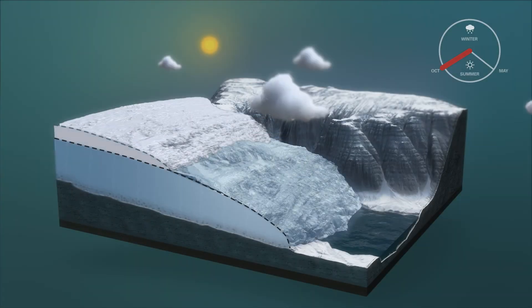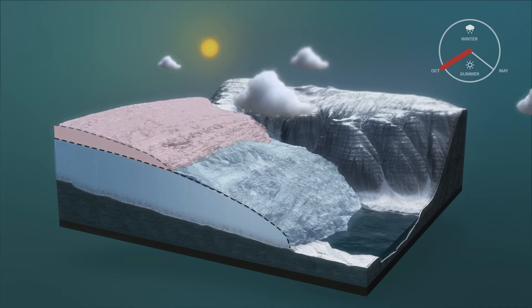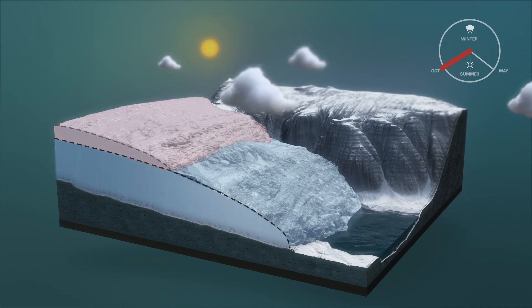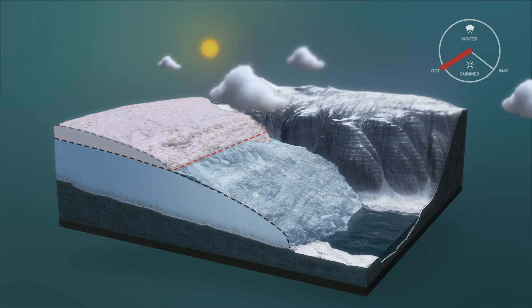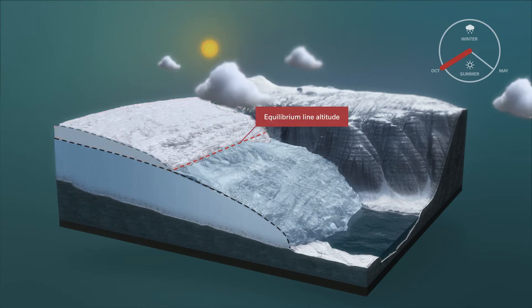As autumn sets in, snow left over from the previous autumn and winter and glacial ice meet on the surface of a glacier at a given altitude. This imaginary altitude line is called the equilibrium line.